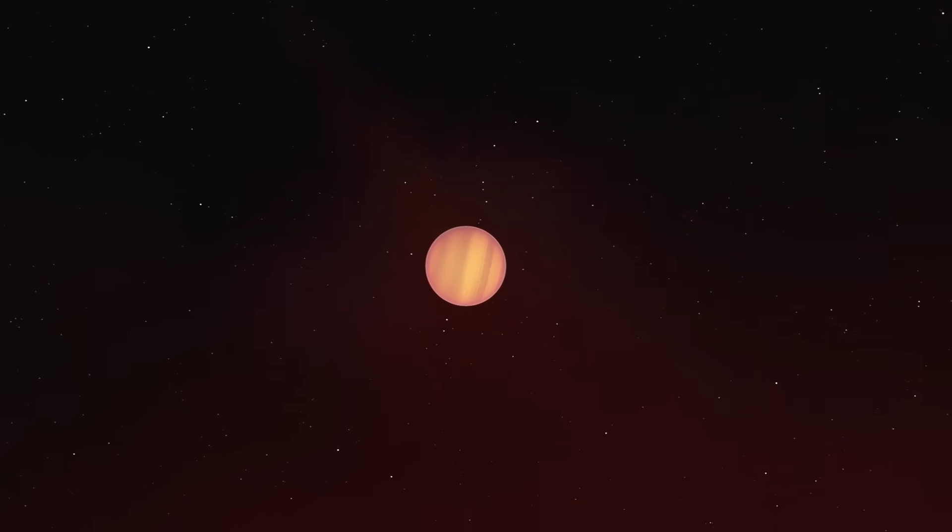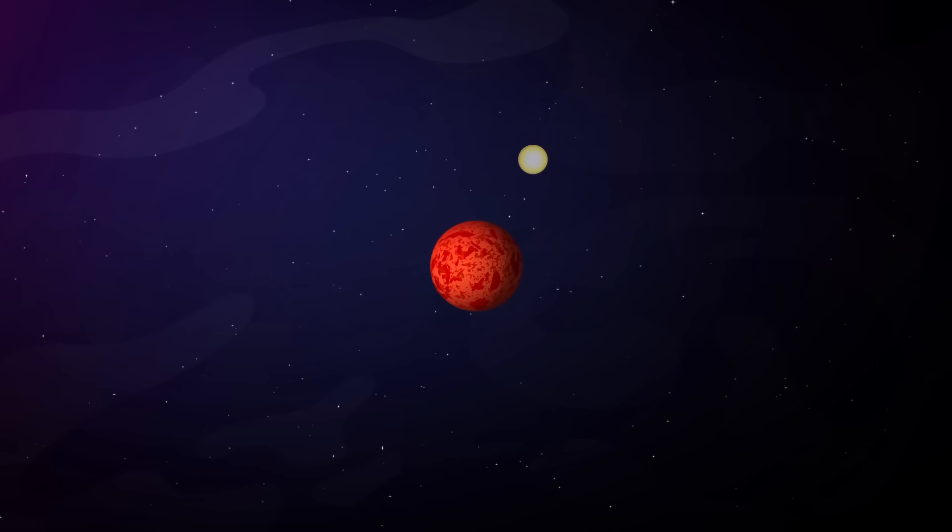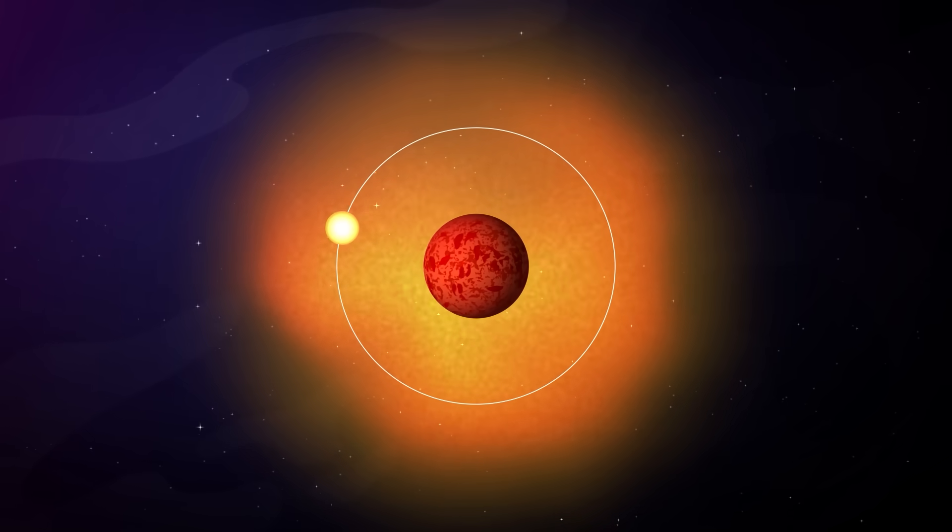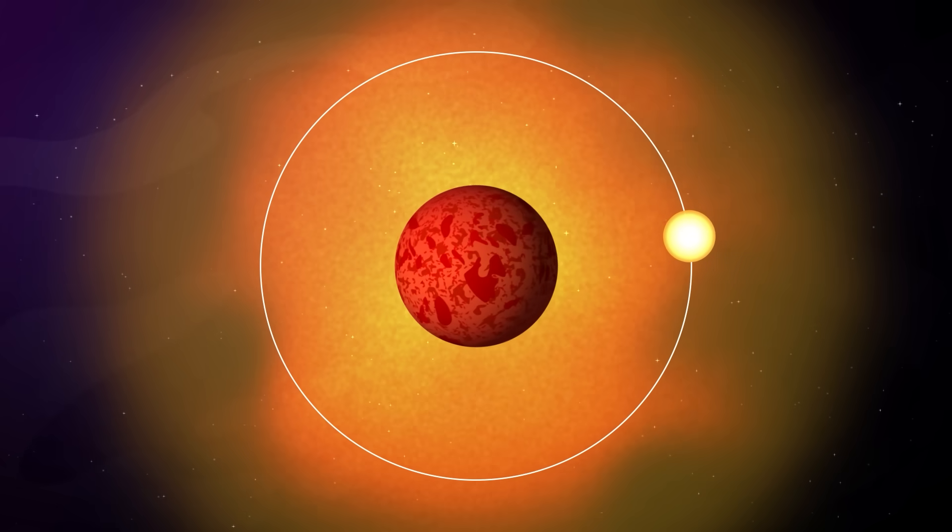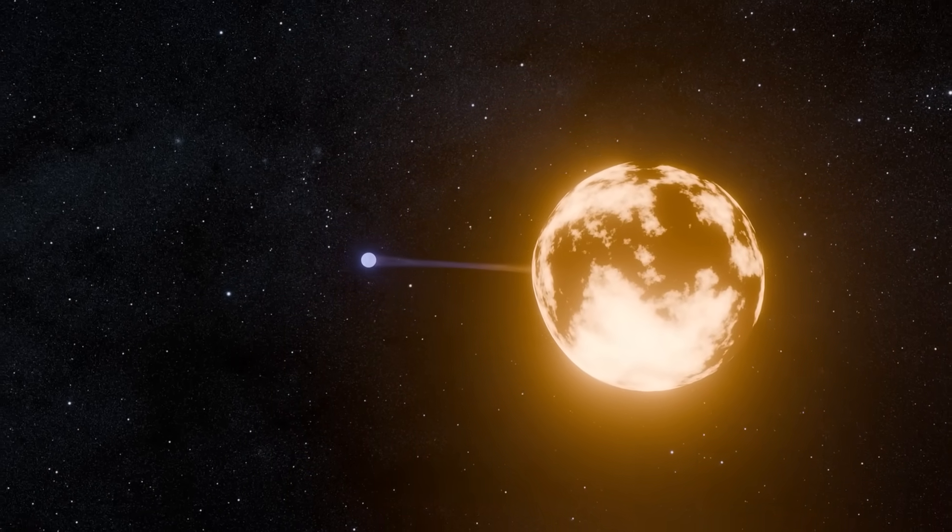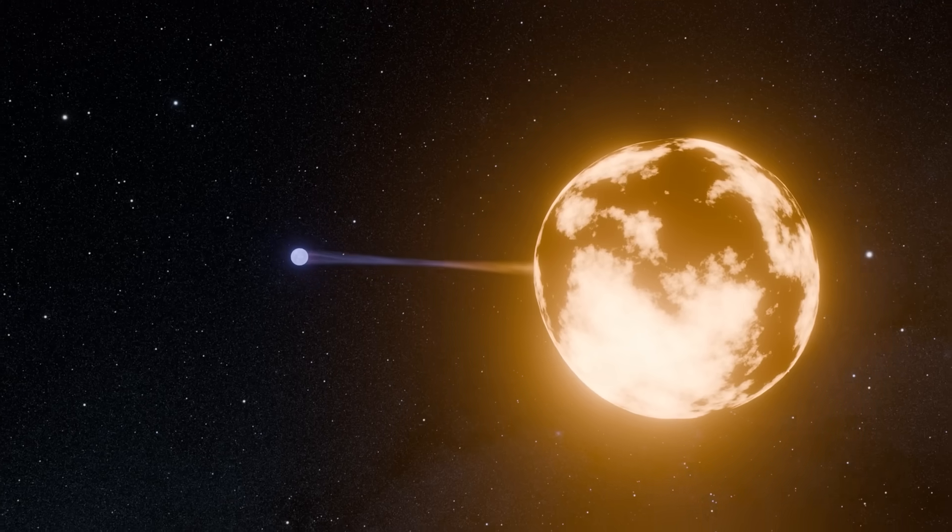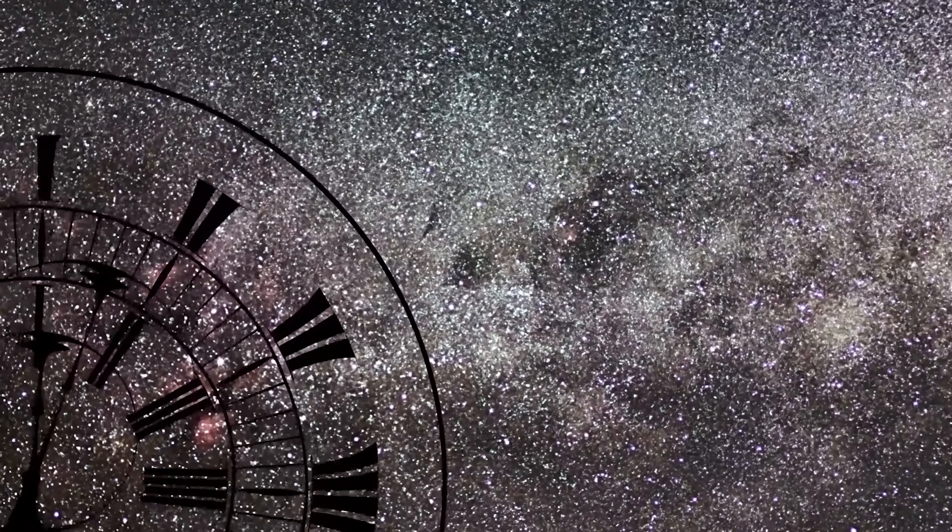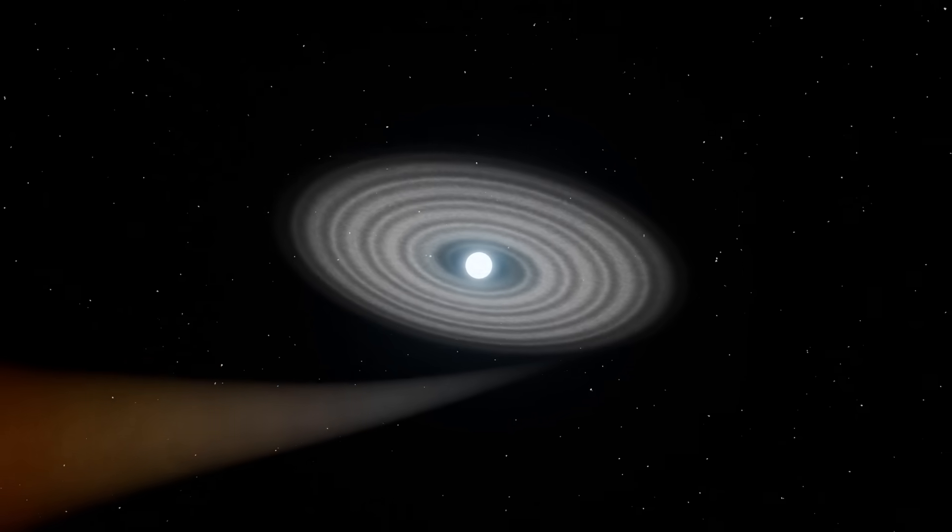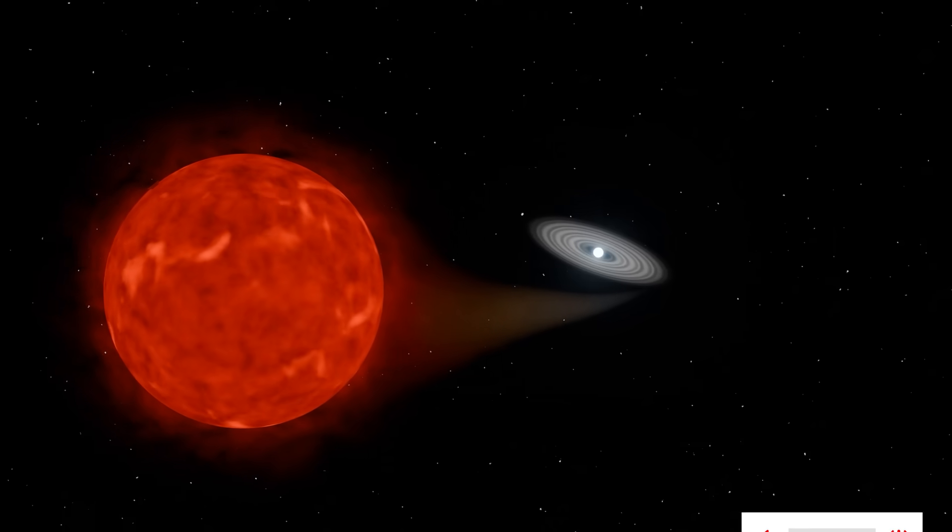But as exciting as the discovery of a companion is, its future appears grim. The faint star orbiting Betelgeuse doesn't seem destined for a long or peaceful life. Its orbit lies just outside Betelgeuse's swollen outer layers, which means it may already be moving through the extended atmosphere of the dying supergiant. And that's dangerous territory. According to current models, Betelgeuse's powerful tidal forces are likely tugging on the smaller star, slowly pulling it inward. Over time, this gravitational drag could cause Siwara's orbit to decay. In fact, astronomers estimate that within the next 10,000 years, a blink of an eye in cosmic terms, Siwara could spiral into Betelgeuse entirely. If this happens, the two stars will merge just before Betelgeuse ends its life in a supernova explosion.